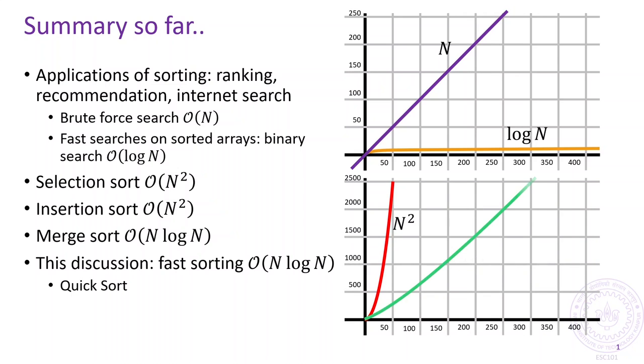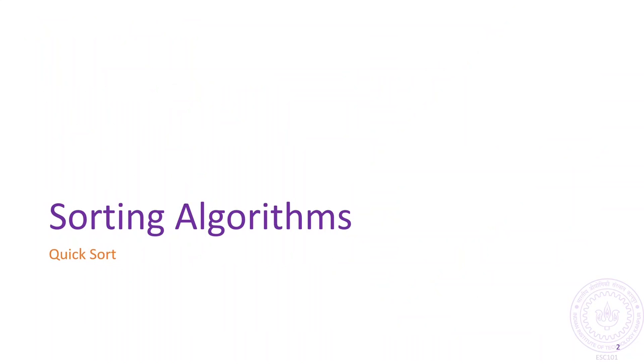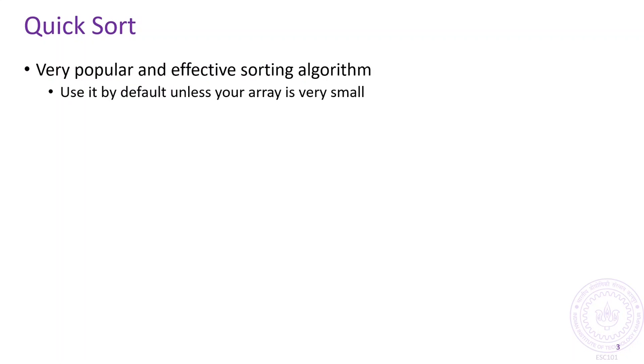In this discussion, we will see a very popular fast sorting algorithm called quicksort. Quicksort is a very popular sorting algorithm. In fact, it is such a nice algorithm that unless the array you are sorting is very small, you should just try using quicksort before trying any other sorting algorithm. It has an order n log n time complexity just like merge sort, but it can be much faster than merge sort in practice.